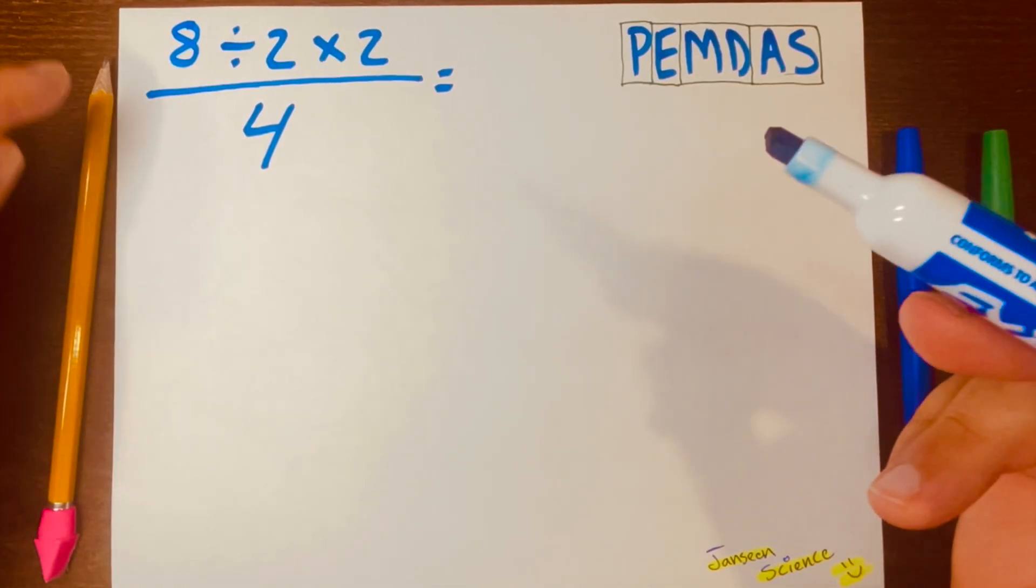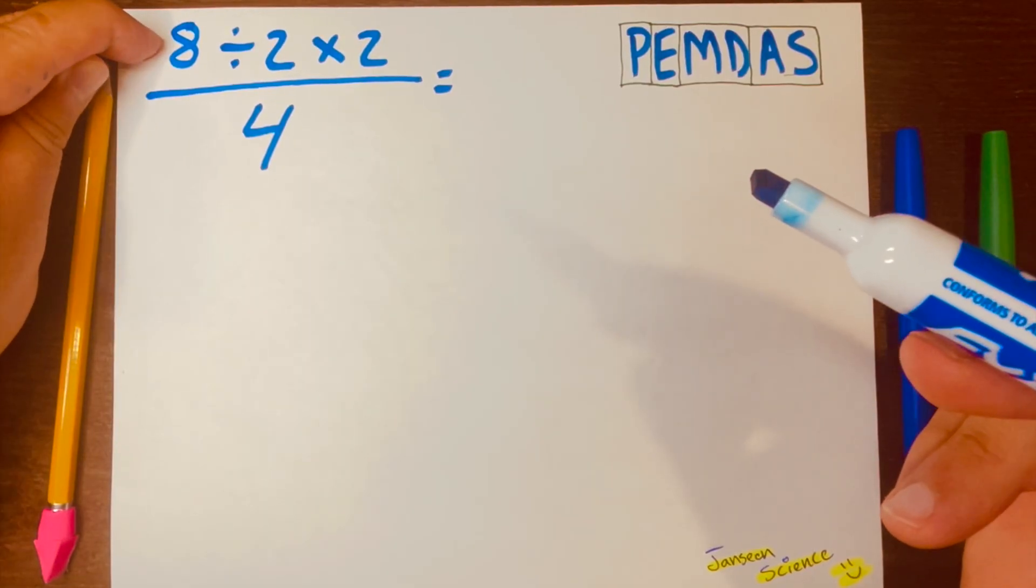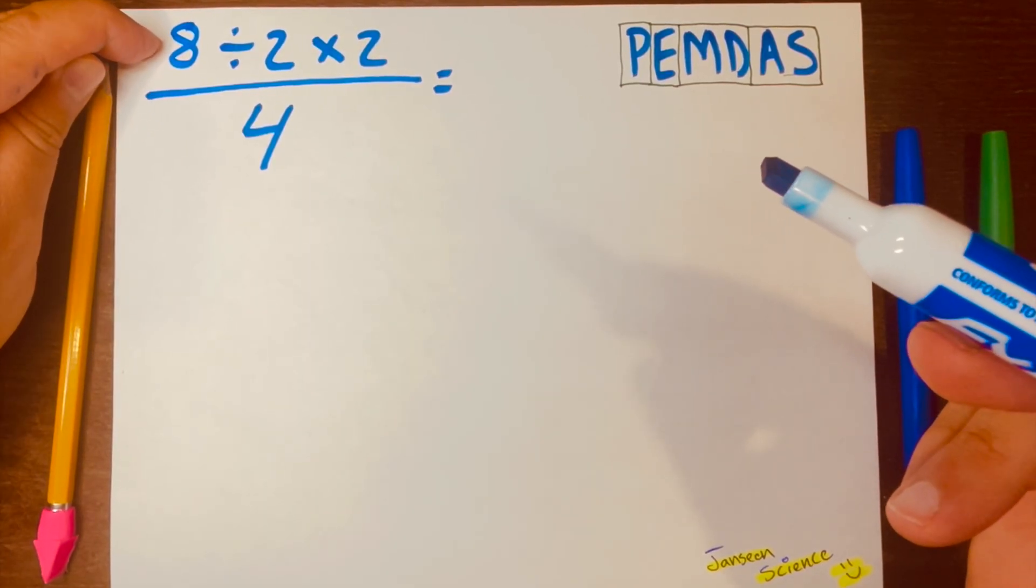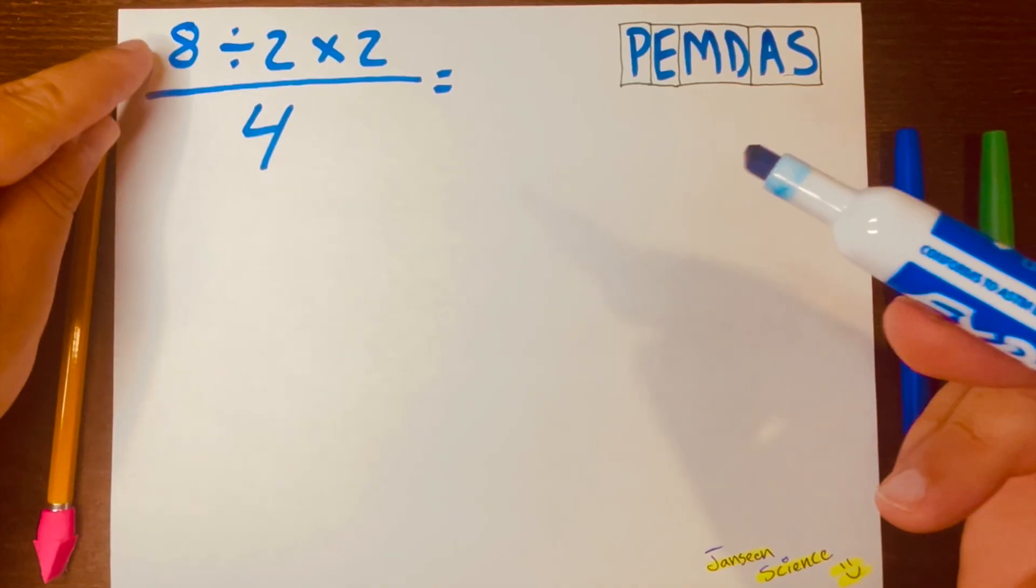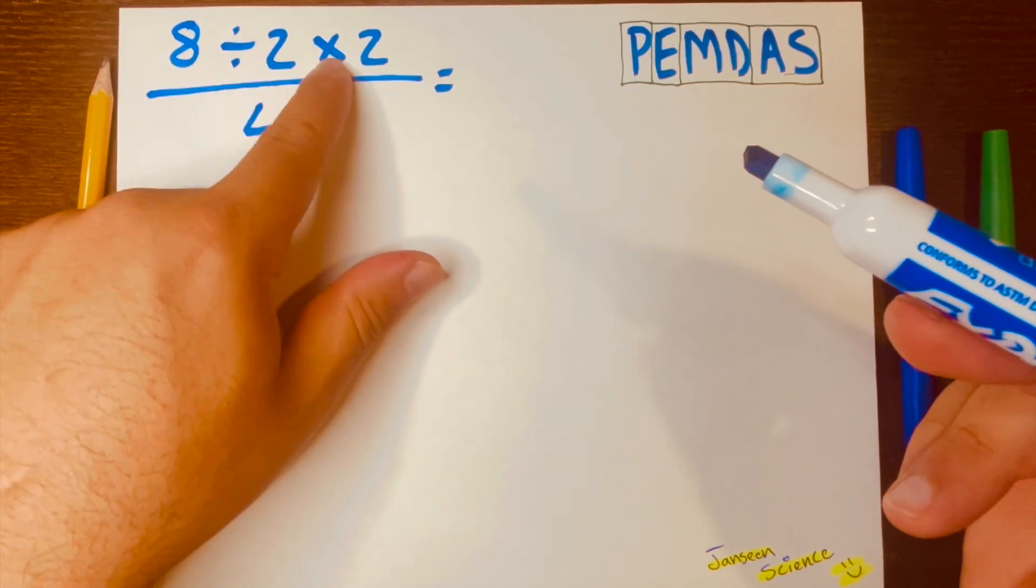Now, I know some will get stuck on solving the top part of the fraction, 8 divided by 2 times 2. Some may start solving 8 divided by 2, and some may start solving 2 times 2.